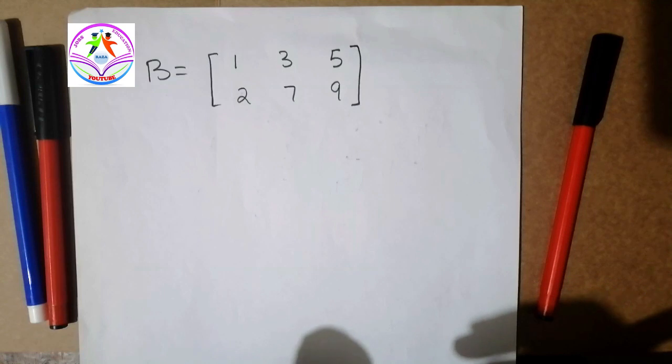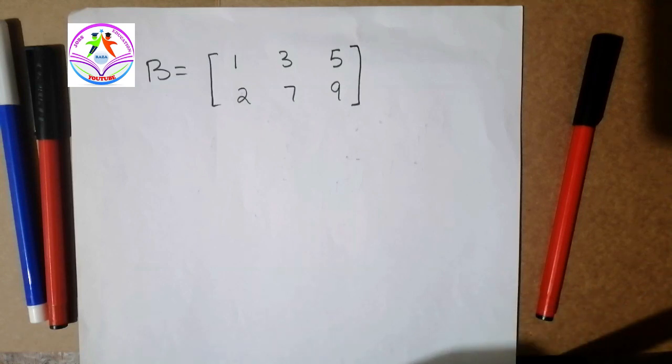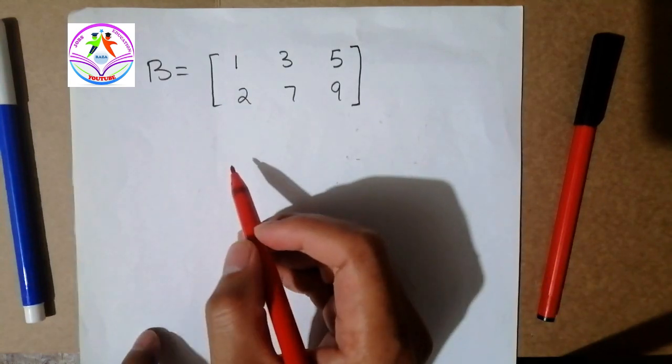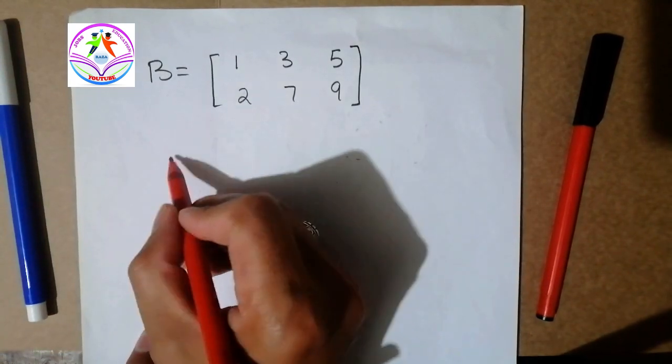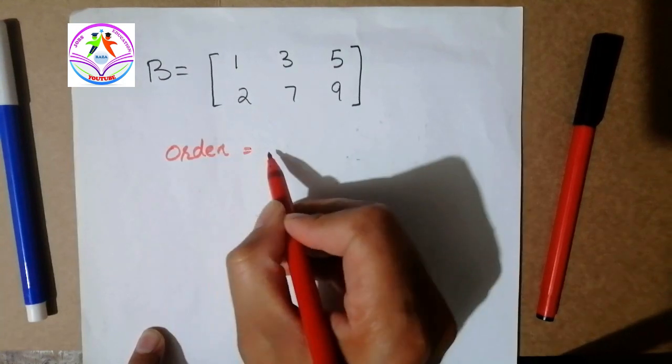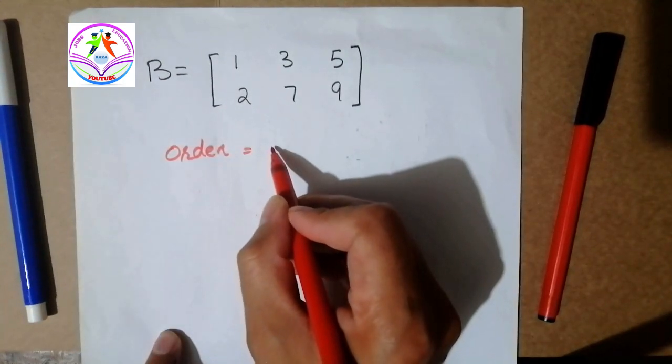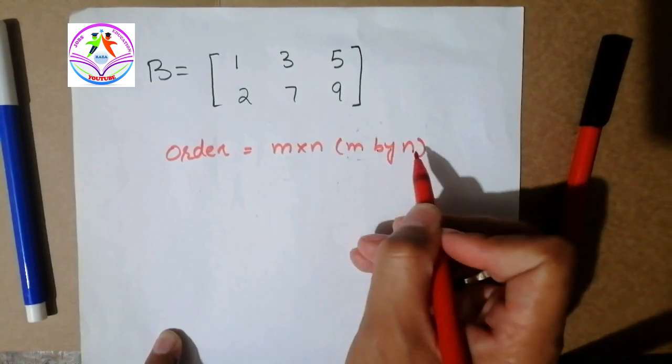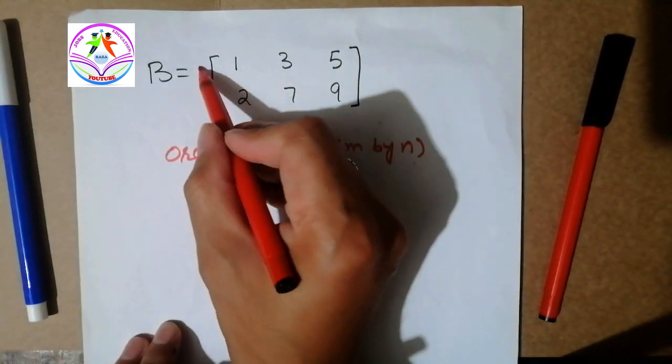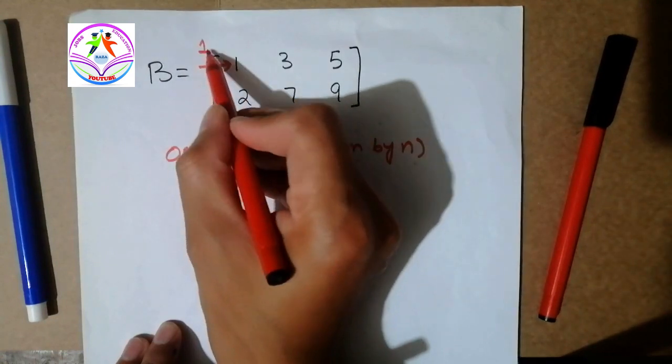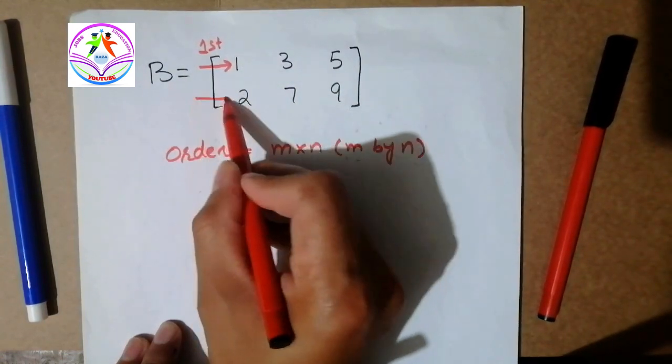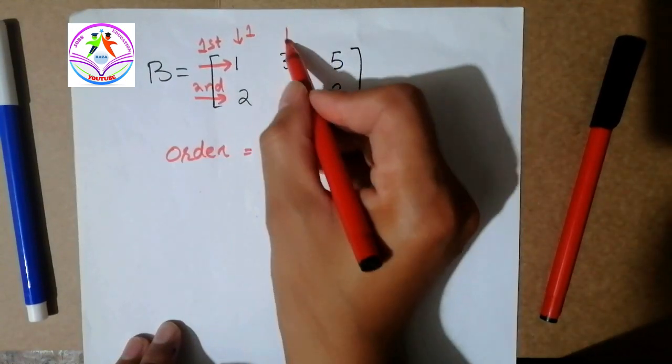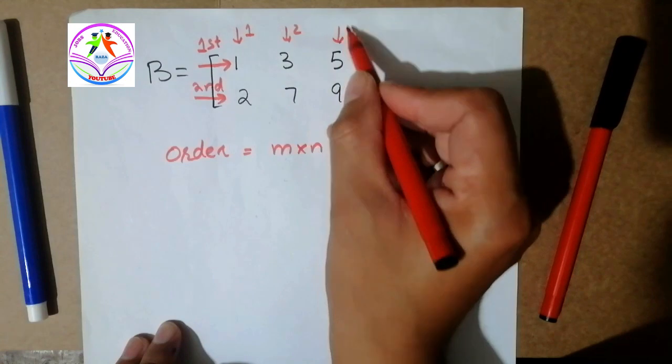So you can pause the video and write your solution in comments so I will check it. You have five seconds, let's go, hurry up. So let me show you the answer of this problem. Let me write it. Order is equal to, that we have already discussed, m cross n or m by n.